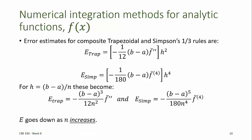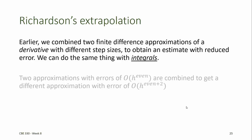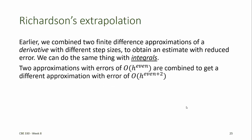Clearly, the error goes down as n, the number of data points, increases. Earlier, we combined two finite difference approximations of a derivative that contained different step sizes to obtain an estimate with a reduced error. We can do the same thing with integrals by applying a different method of Richardson's extrapolation. In this application, we combine two different approximations that both have order of h to an even power, and that provides us with a different approximation that has an error of the order h with that same even power plus 2.